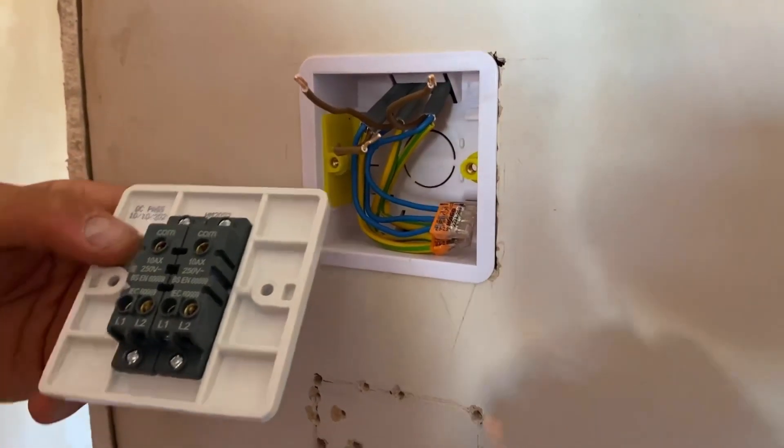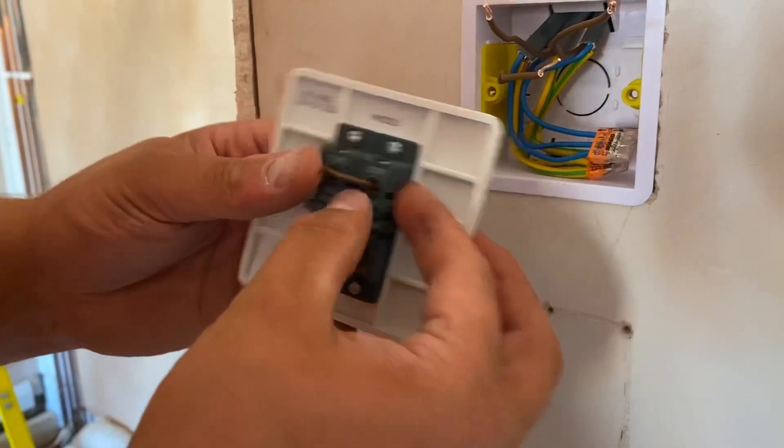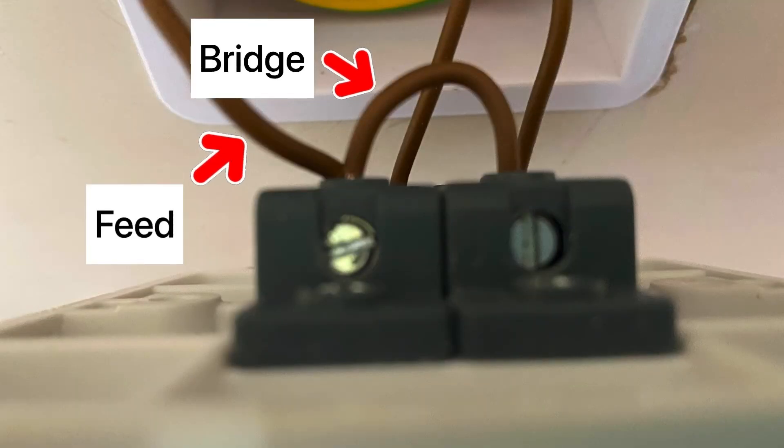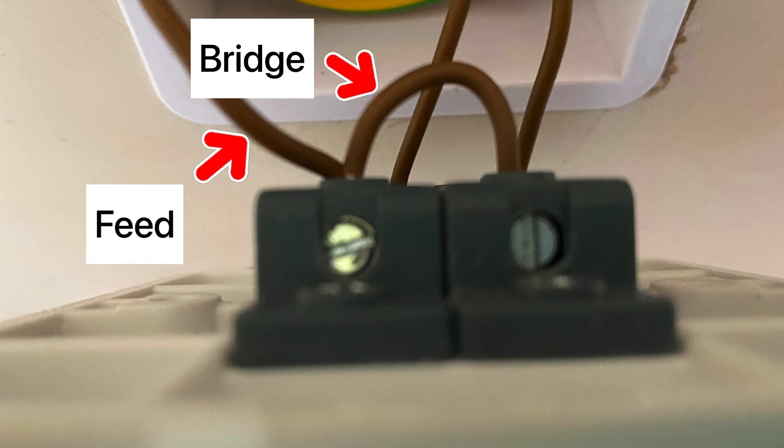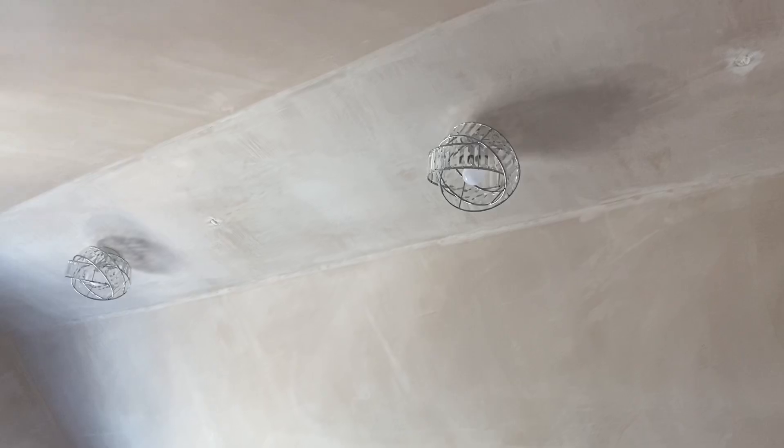But what we're going to do is we're actually going to put in what we call a bridge, a bridging one, or just a little connection to take the permanent feed. Doesn't matter which one the permanent feed comes into. And again, this is purely because when we operate one switch, one light will come on.